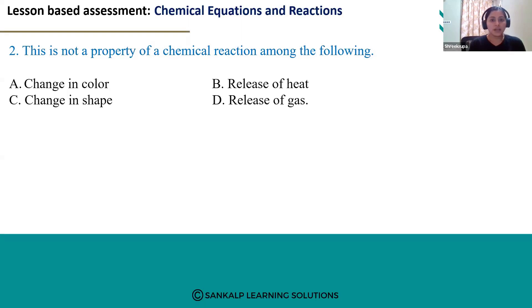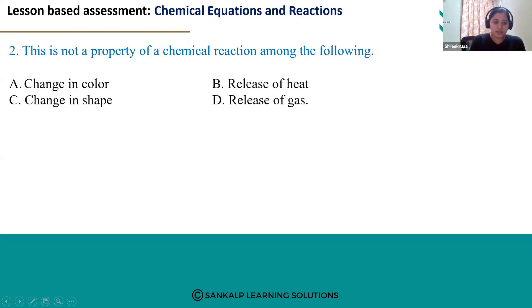So which cannot be the answer among the given options? Change in color is a chemical change. Release of heat is also a chemical change because we observe a change in temperature. But the third option, change in shape, is not a chemical change — we identify chemical reactions by change in state, not shape. So the third option is the correct answer. Change in shape is a physical change, not a chemical change.